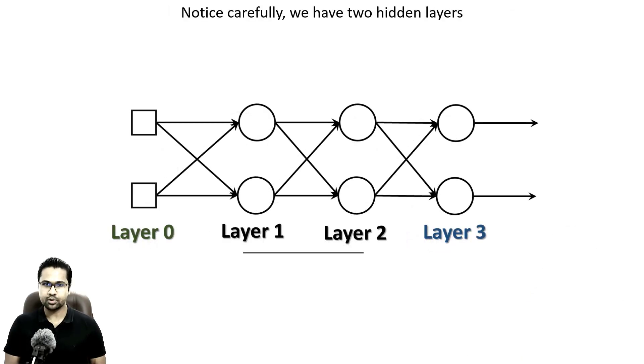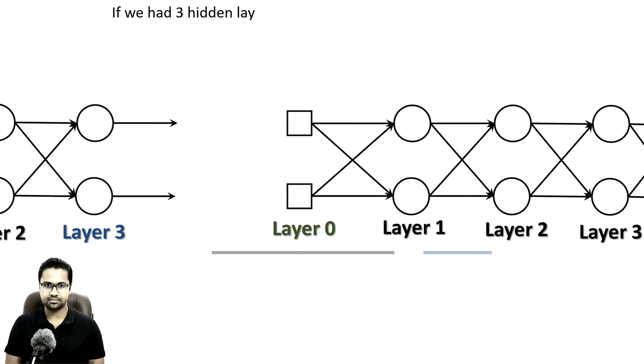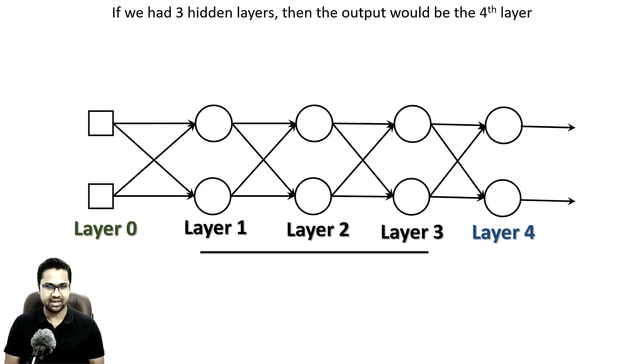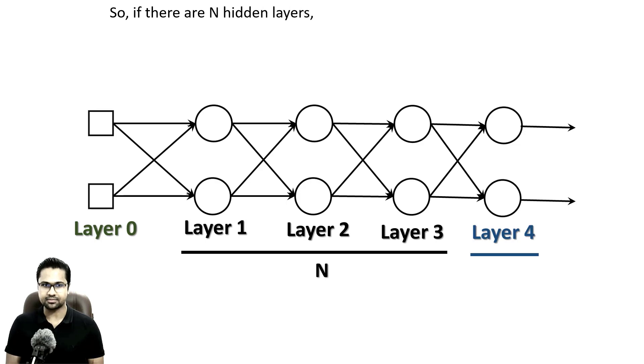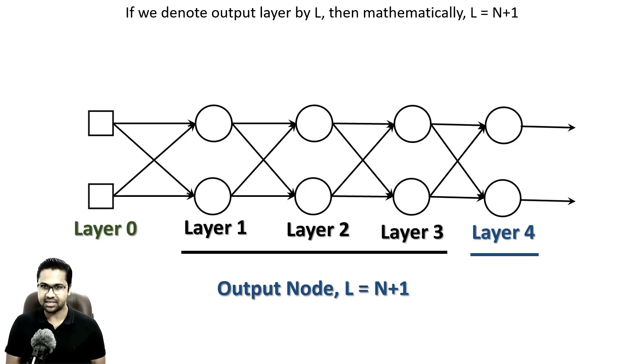Notice carefully, we have two hidden layers. If we have three hidden layers, then the output layer would be the fourth layer. So, if there were n hidden layers, then the output layer would be n plus 1th layer. If we denote output layer by L, then mathematically, L equals n plus 1.